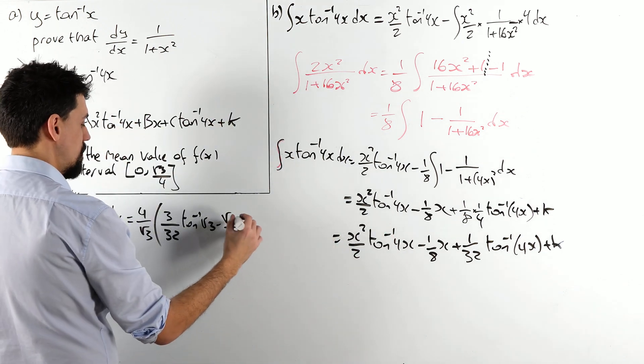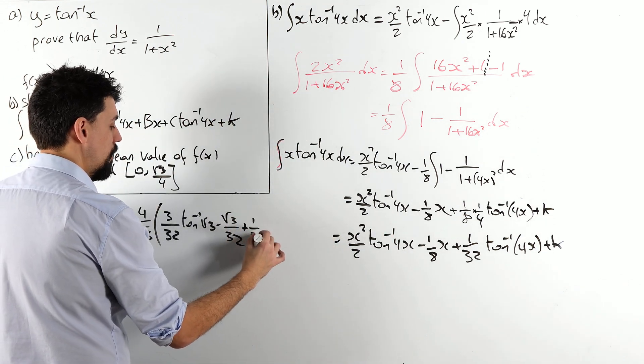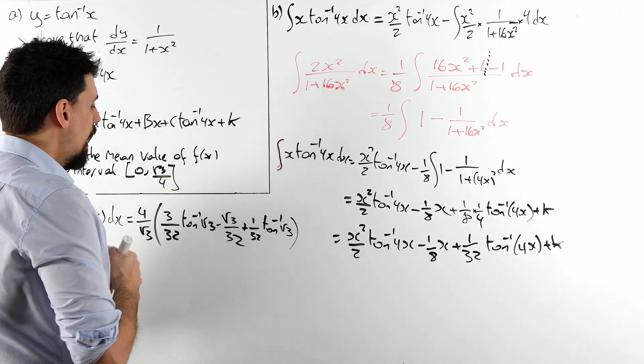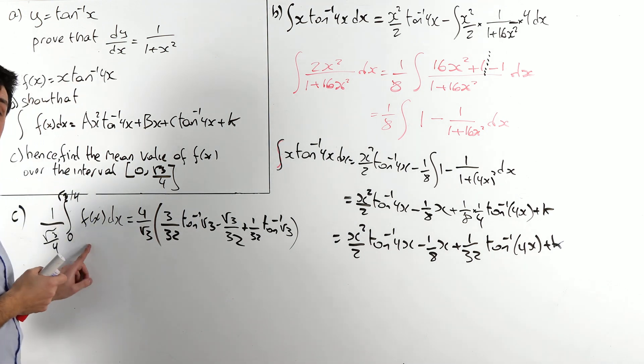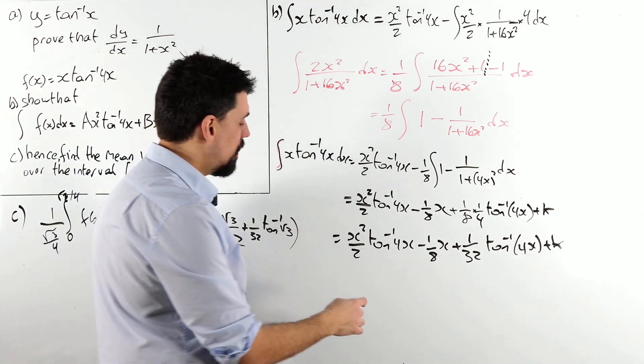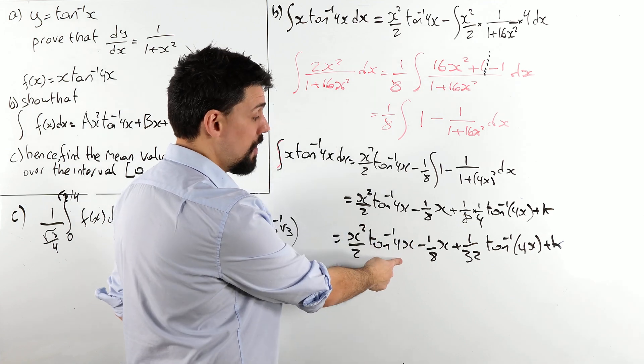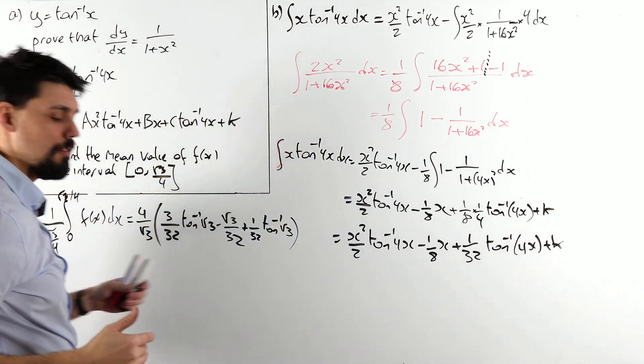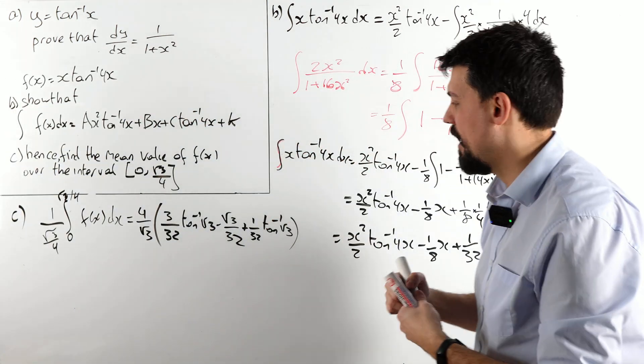Plus, again, 1 over 32 inverse tan of root 3. And then minus, I need to plug in 0, well, 0 inverse tan of 0, 0, 0 inverse tan of 0, 0. Bosh, the 0's go away, not going to bother with them, not even on my radar.